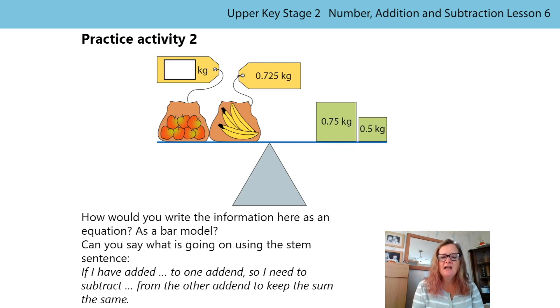Your second practice activity is looking at some mass of some fruit. But have a really, really close look at the numbers. How would you write the information here as an equation or as a bar model? That might help you, might be a good place to start. And can you say what's going on using the stem sentence? If I have added to one addend, so I need to subtract from the other addend to keep the sum the same. Have a close look at these numbers. Look, I noticed this has got three decimal places, two decimal places, one decimal place. I have also noticed that they're all in kilograms. But have a really careful think about that one. And until next time, good luck and see you all soon. Bye bye.